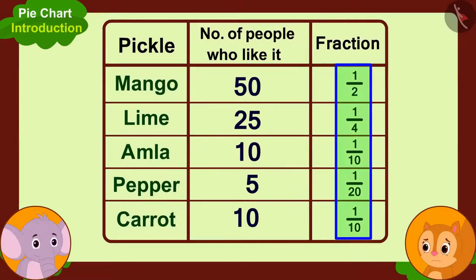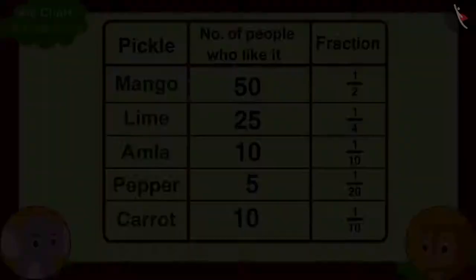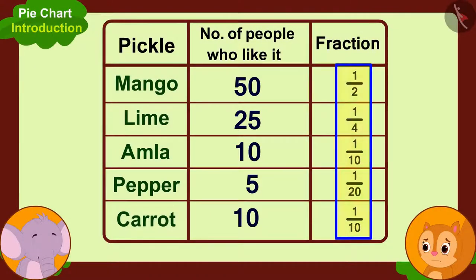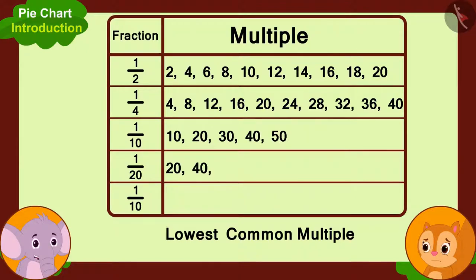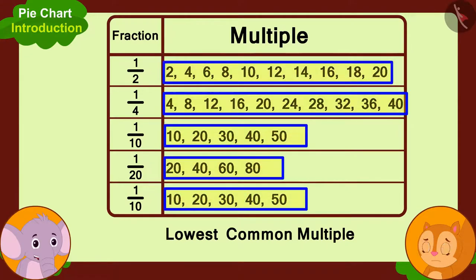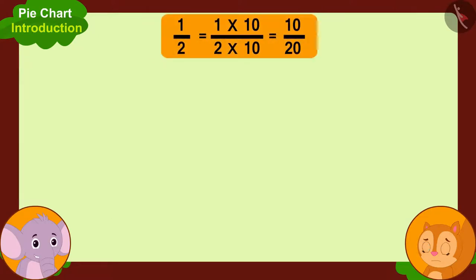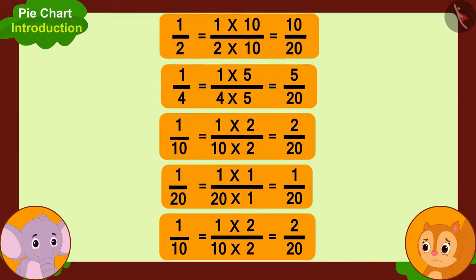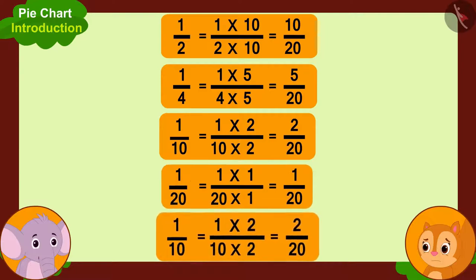But the total number of parts in all these fractions is different, so how do we represent them? To solve this, we will first find the lowest common multiple — the smallest common multiple — of the total parts of all these fractions. In this way, 20 is the lowest common multiple of these numbers. Now, we will write all these fractions in such a way that the total parts of all of these fractions is 20.